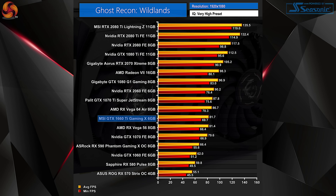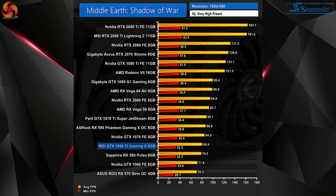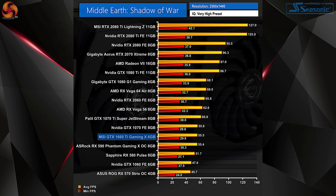Comparing the 1660 Ti to the Vega 56 reference card, it is on average 10% slower than reference Vega 56. That said, it is still a very competent card for gaming.